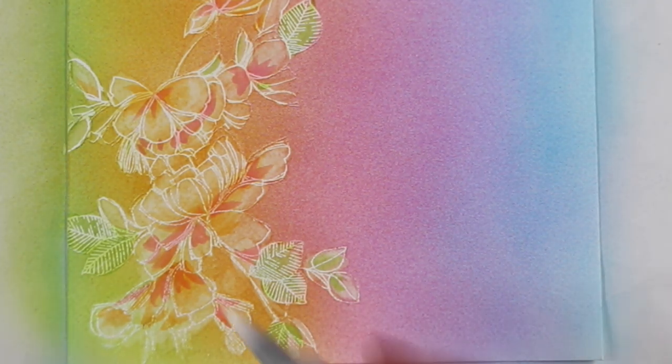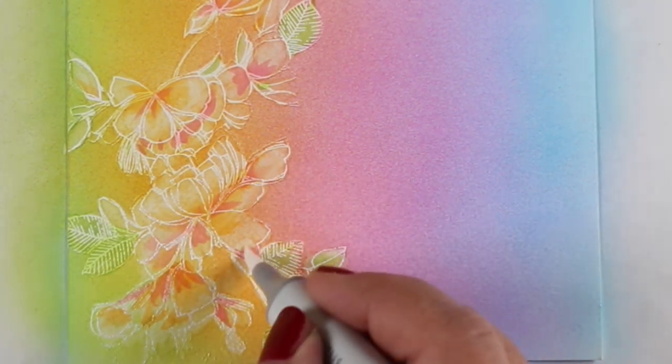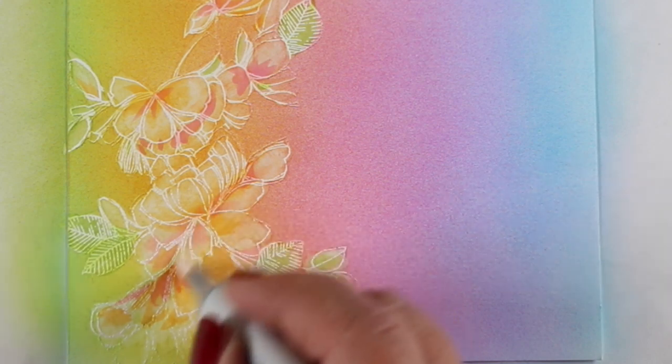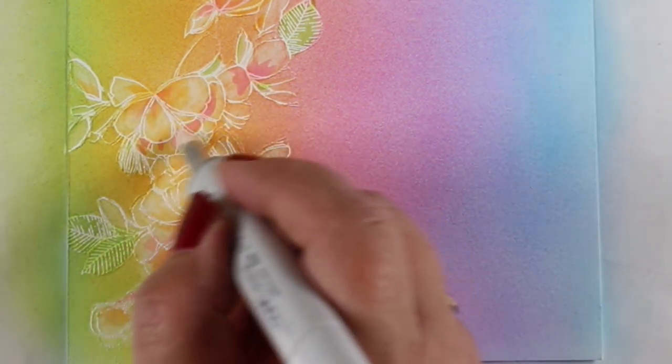But again, as you go over any of this, make sure you just take a look at your nibs. That you're not picking up any of the embossing powder or anything. Nothing's flaking off in your nib. And just scribble it off and you should be fine.